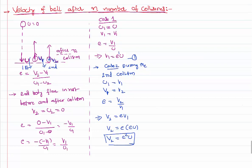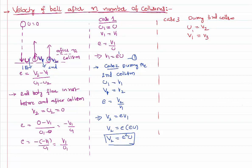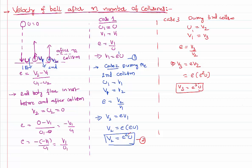If you consider the third collision, Case 3: during the third collision, velocity just before the collision is V2, and velocity immediately after the collision is V3. So coefficient of restitution is V3 / V2, which implies V3 = E · V2. Since V2 = E² · U, substituting gives V3 = E³ · U. So after the third collision the velocity is E³ · U. Noticing the pattern: first collision E¹, second collision E², third collision E³, therefore I can write in general: